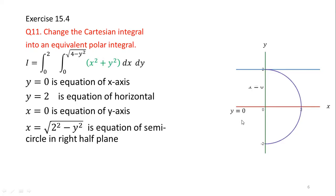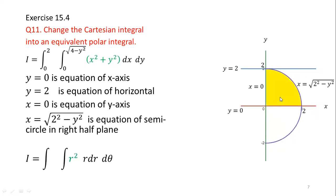In this diagram, the x-axis and y-axis are shown. Since x = 0 and y = 0 are involved in my boundaries, I have made the axes dark. y = 2 is a horizontal line passing through y = 2 on the y-axis. x = √(2² − y²) is a semicircle with radius 2 and center at the origin, meaning the distance of each point on the circle from the origin equals 2. The common region of all four boundaries is in the first quadrant, which is our region of integration.